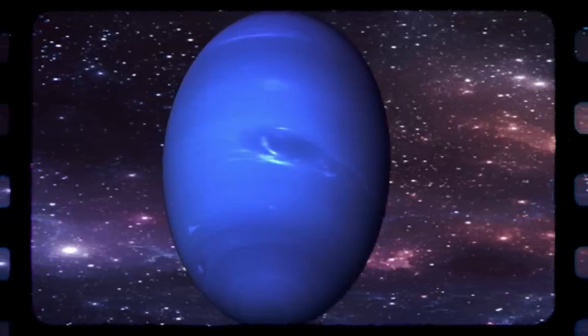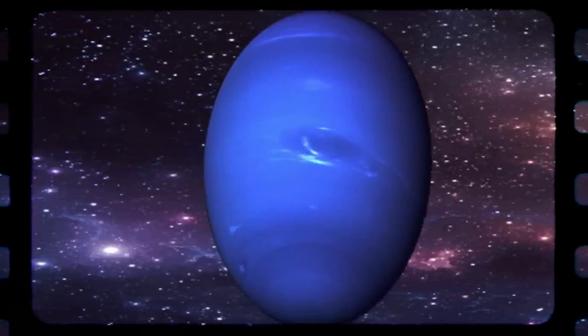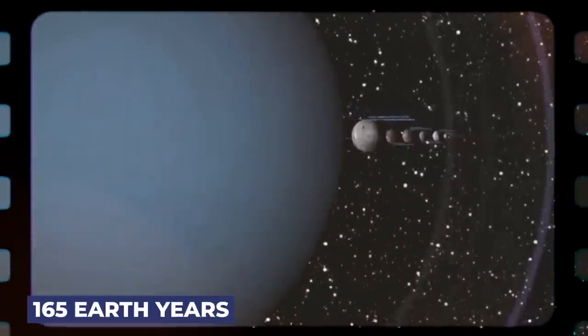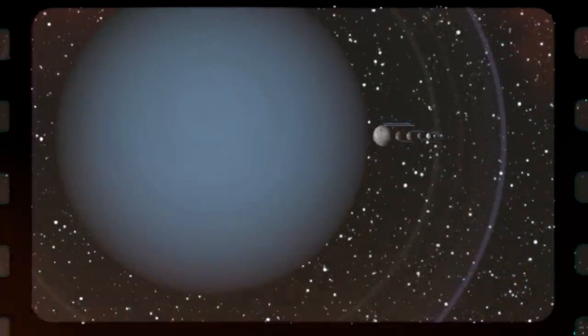Neptune has a very slow orbit period due to its long distance from the Sun. It takes about 165 Earth years to complete one revolution around the Sun. To put this in perspective, if Neptune was inhabited like Earth,